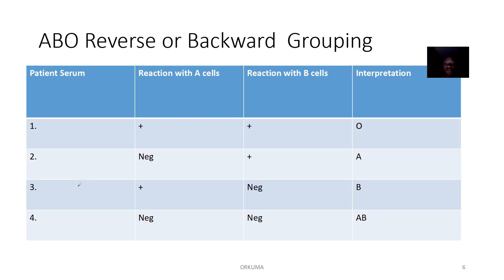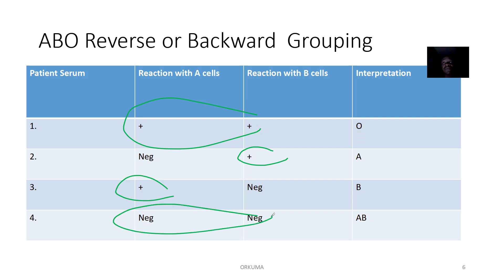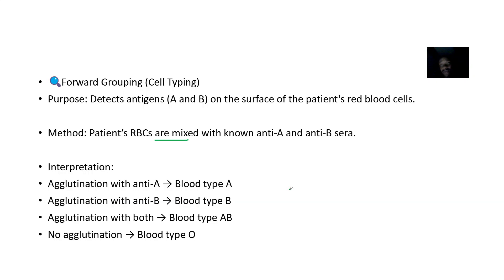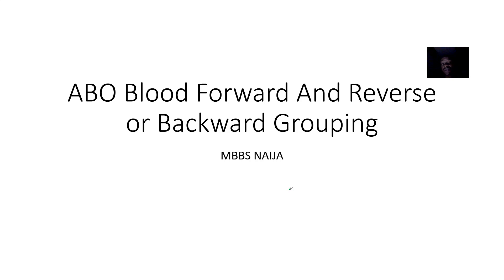So to summarize the reverse grouping: if you agglutinate with B red cells, it is blood group A. If you agglutinate with A red cells, it is blood group B. If there is no agglutination, it is blood group AB. That was the summary of results for ABO blood grouping, both forward and reverse.